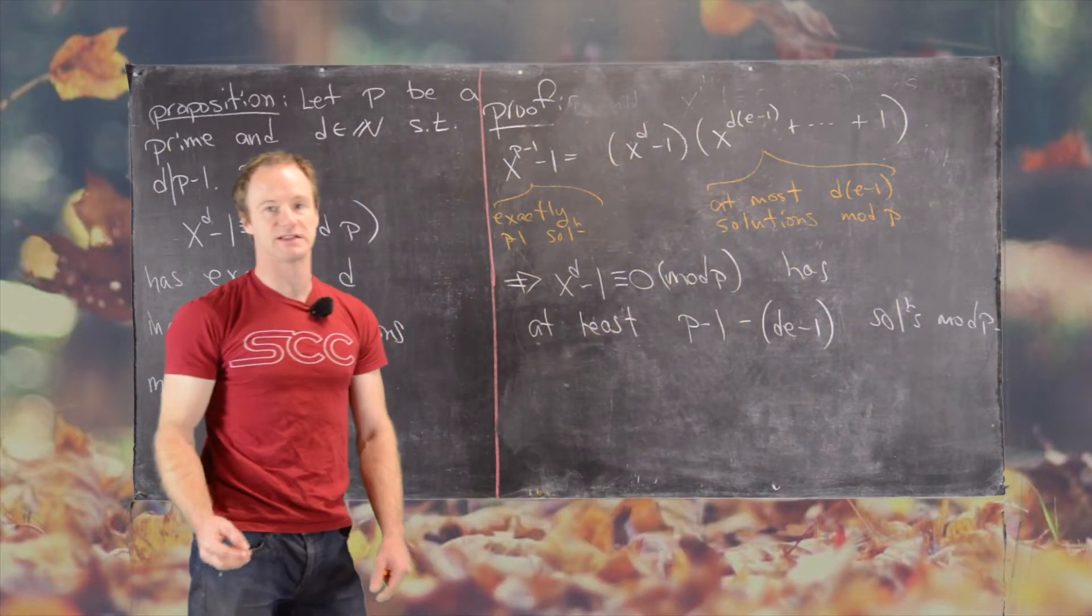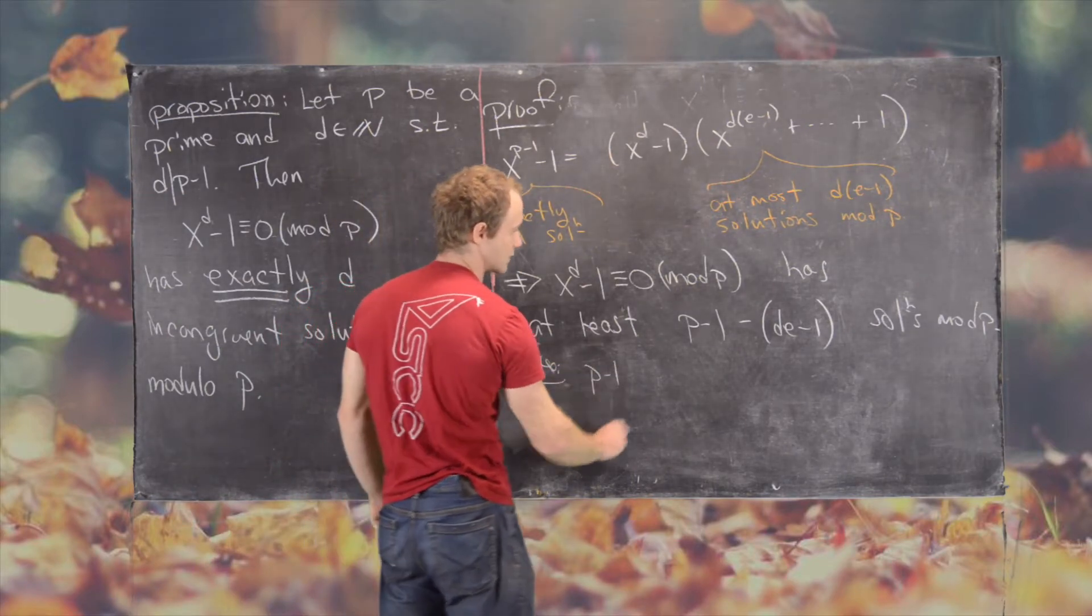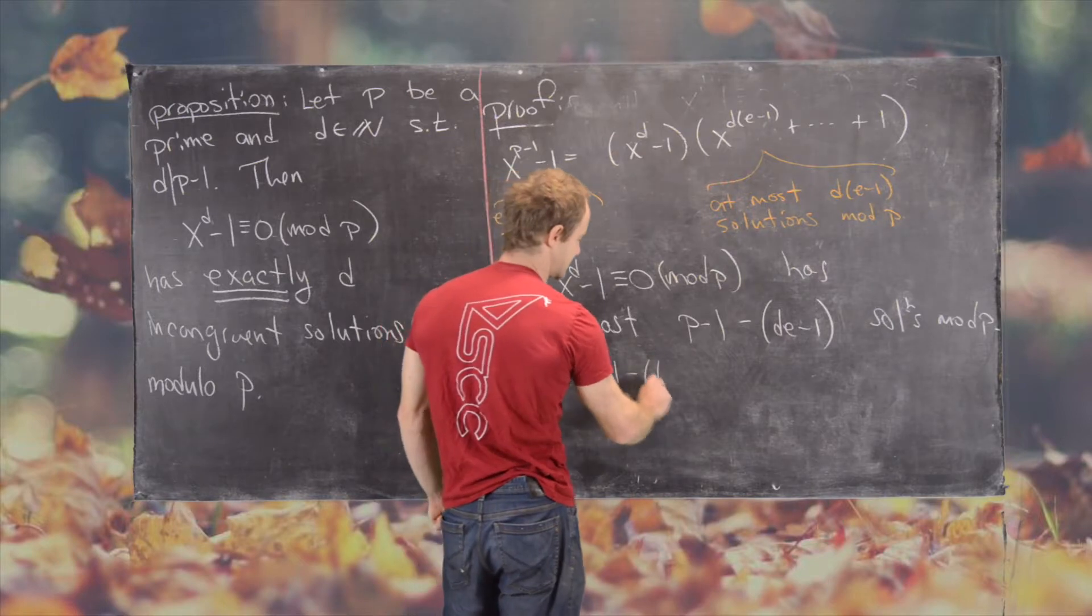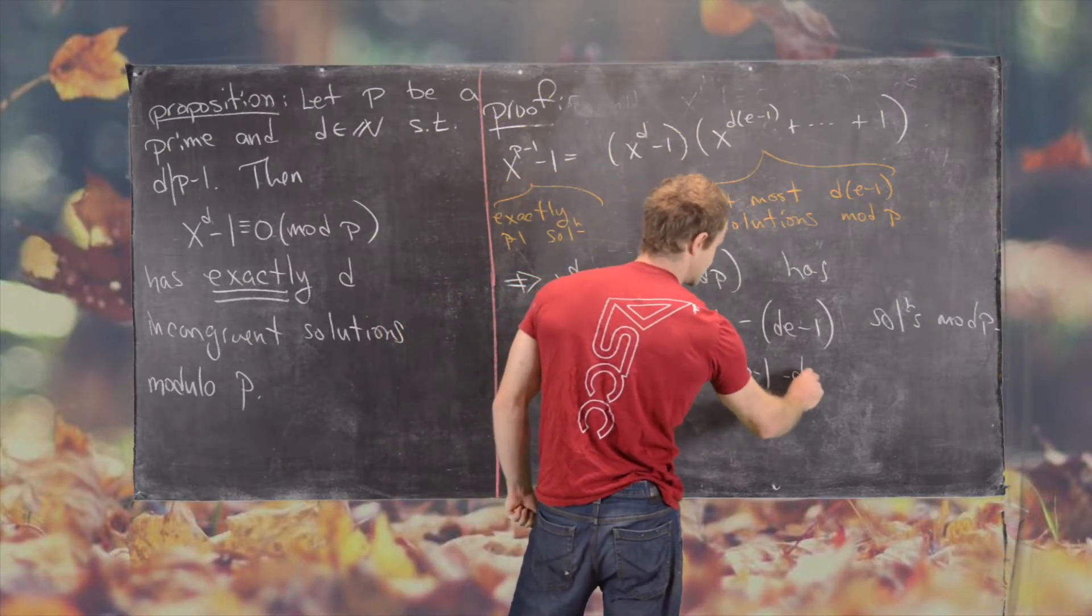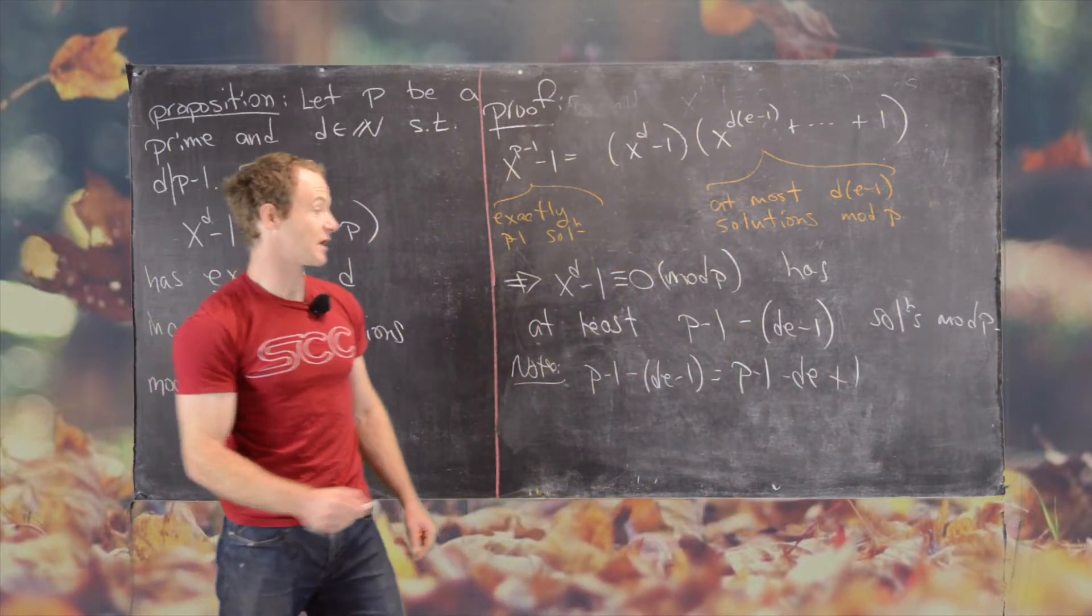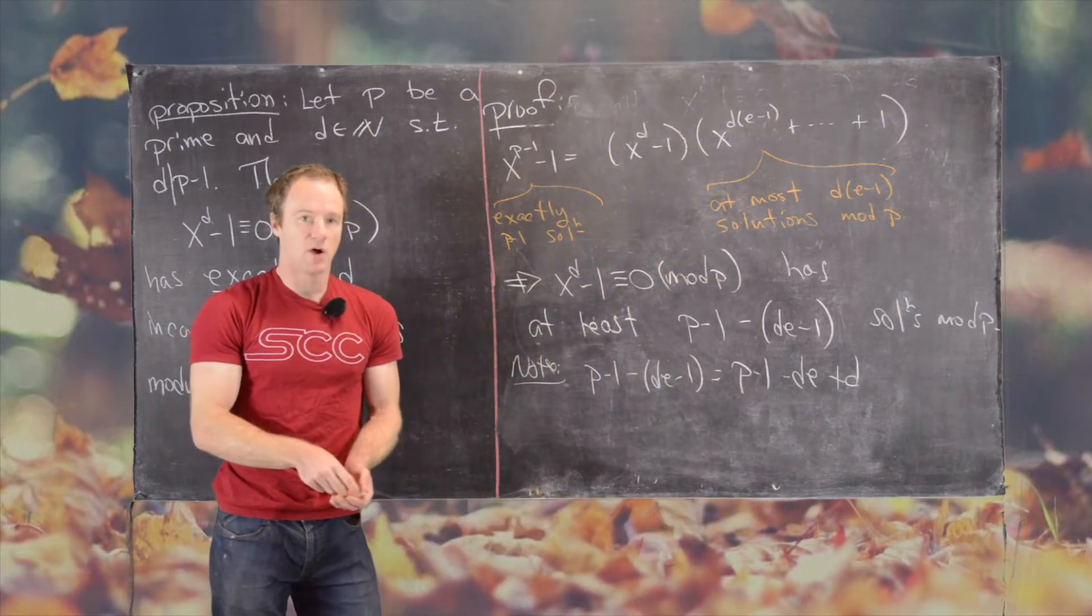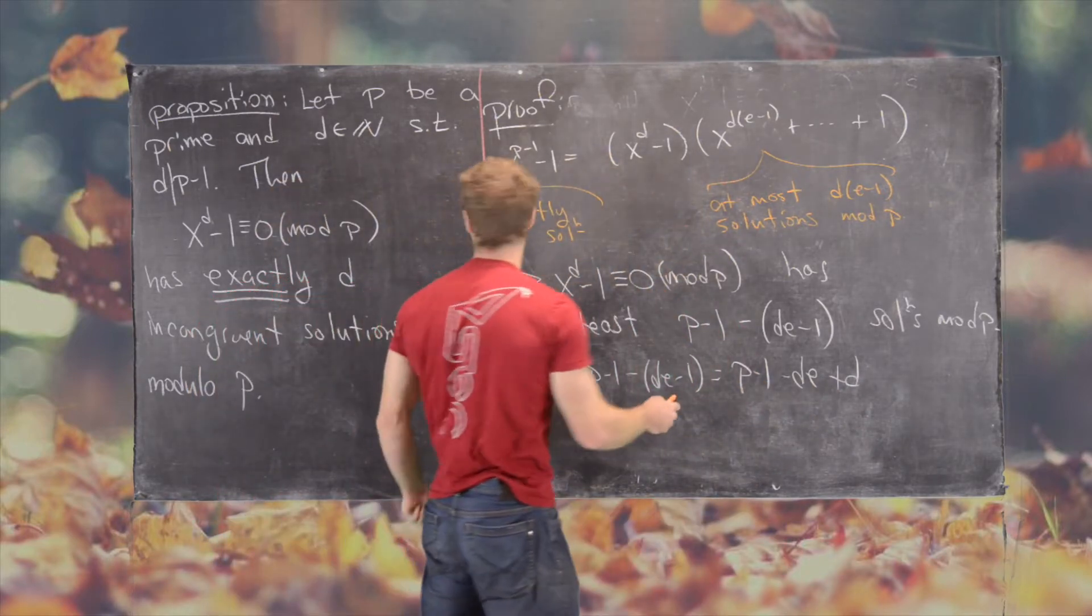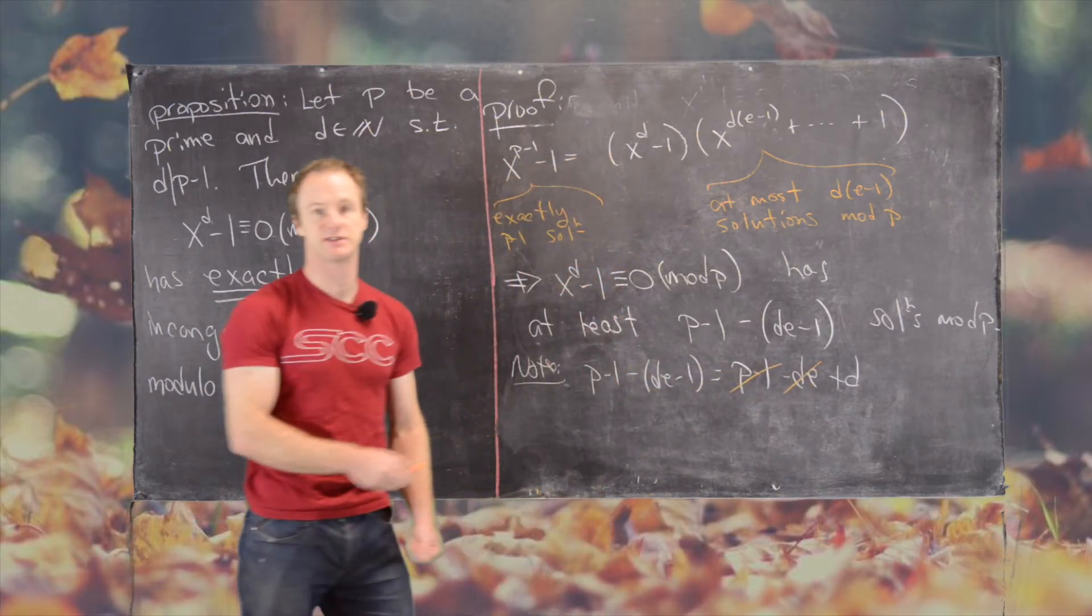But now let's simplify that. So p minus 1 minus de minus 1 equals p minus 1 minus de plus 1, plus d. But then our original assumption was that d divided p minus 1 and that d times e was p minus 1. So those cancel.